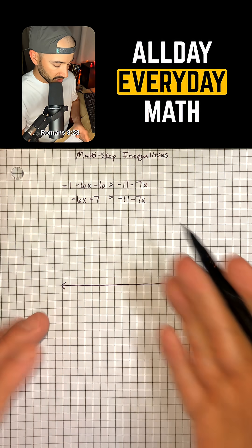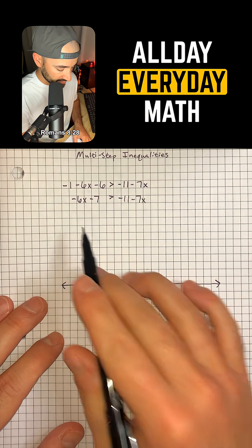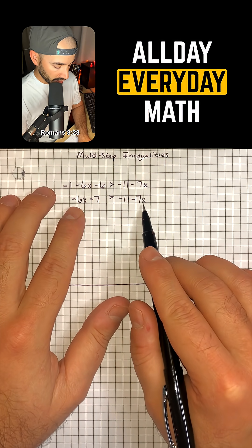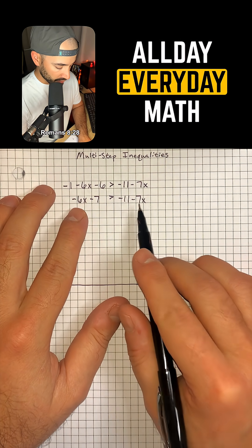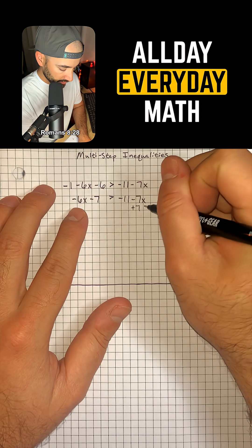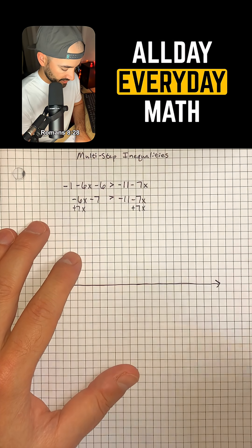And so now we can just treat this like an equation with variables on both sides. We need to cancel out one of our variables, so I'm going to do that on the right by adding 7x, and we need to do that to both sides.